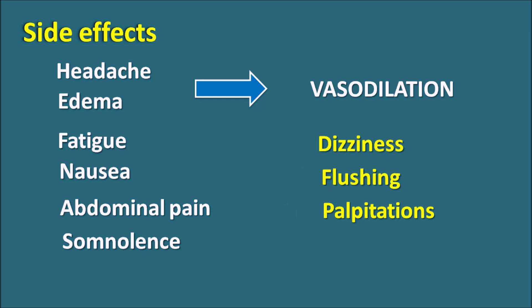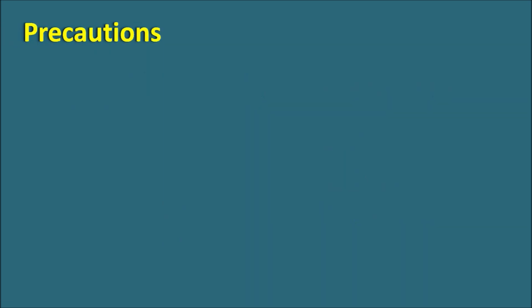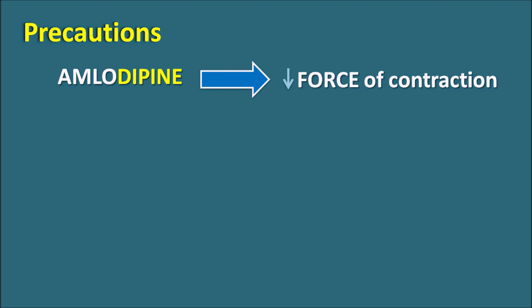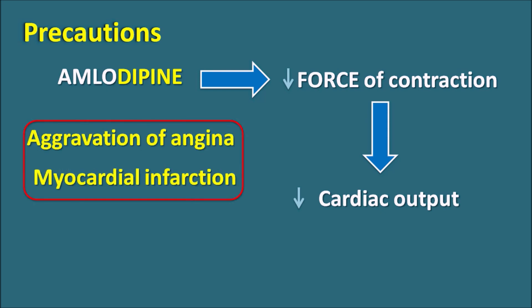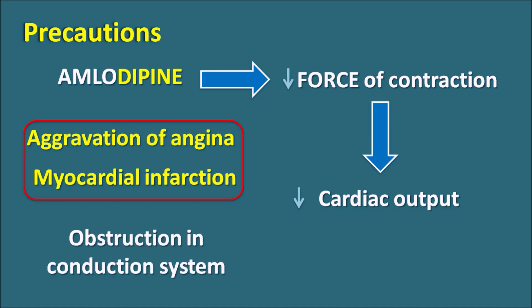Amlodipine can also produce palpitations due to a reflex mechanism. Regarding precautions: amlodipine acts on the cardiac muscle and reduces the force of contraction, thereby reducing cardiac output. This is important in patients with cardiovascular disorders, as amlodipine can aggravate anginal attacks and myocardial infarction — particularly in patients who have an obstruction in the cardiac conduction system. Amlodipine should be used carefully in such patients.